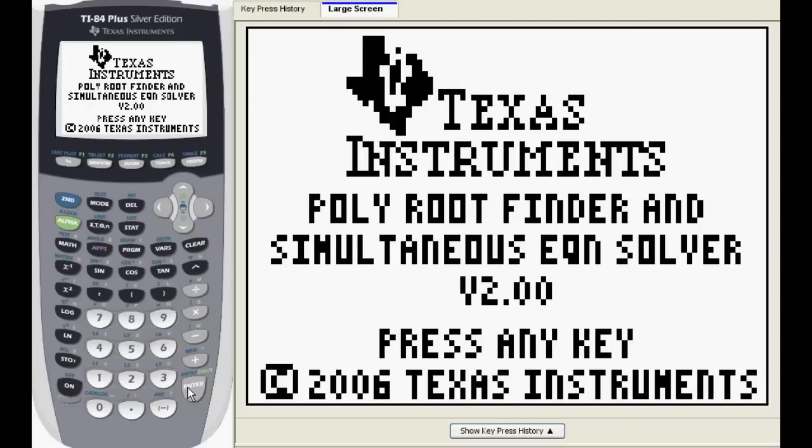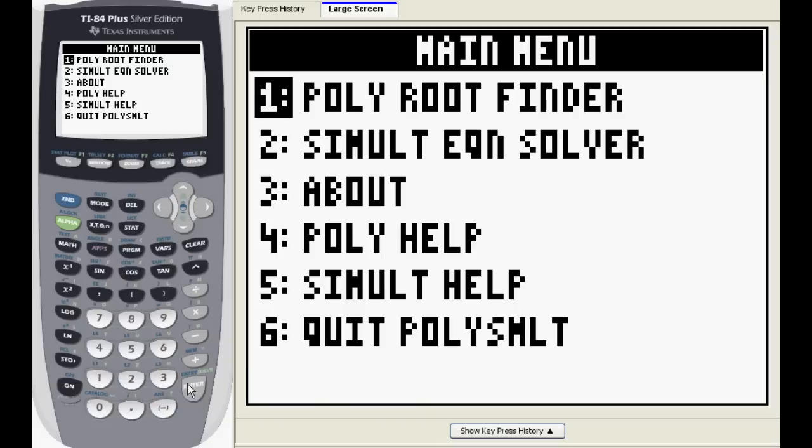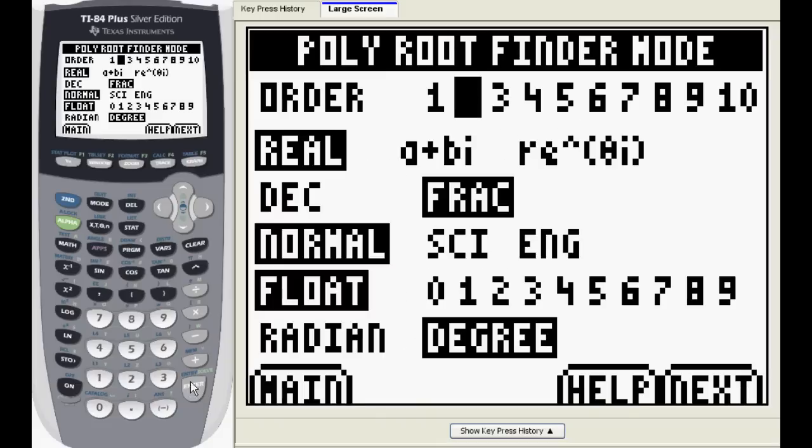Select the polynomial root finder. Now we have a number of options. Order is the biggest exponent in your polynomial. You can choose whether you want to include complex numbers as possible solutions. You can also choose to have the solutions displayed as fractions or decimals, and if you choose decimals, how they appear.